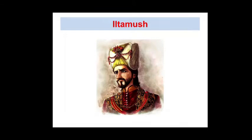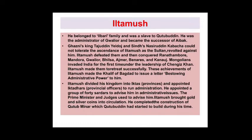The next king is Iltamash. He belonged to the Ilbari family and was also a slave of Qutubdin Aibak. He was the administrator of Gwalior and became the successor of Aibak. All the neighboring rulers could not accept Iltamash's rule, so they revolted against him. Iltamash defeated them and conquered Khan, Ranthambore, Mandore, Gwalior, Vidisha, Ajmer, Varanasi, and many other places. At the same time, Mongols also invaded India for the first time under the leadership of Genghis Khan, and Iltamash made them retreat successfully.